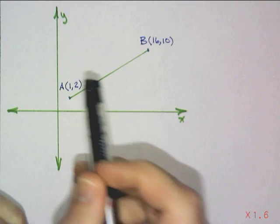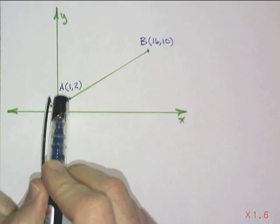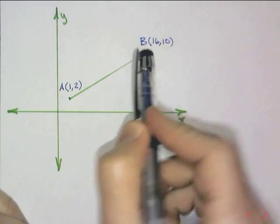Here we go. So, I have two points. Point A, which has coordinates (1,2), and B, which has coordinates (16,10).